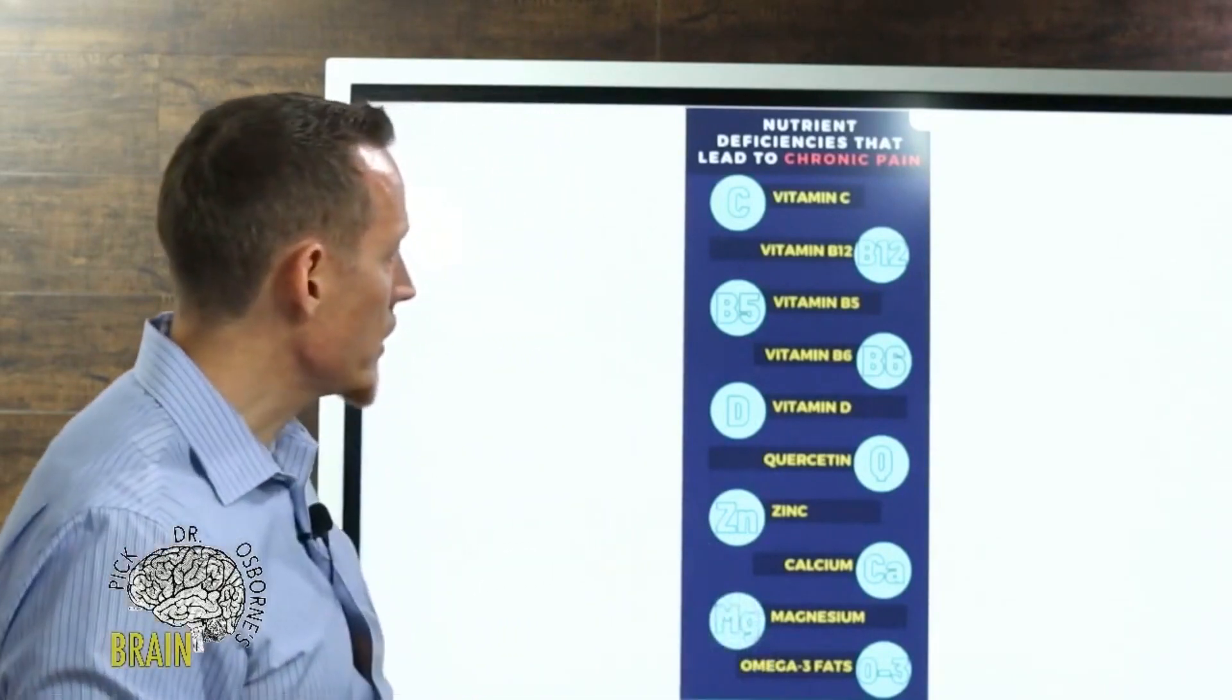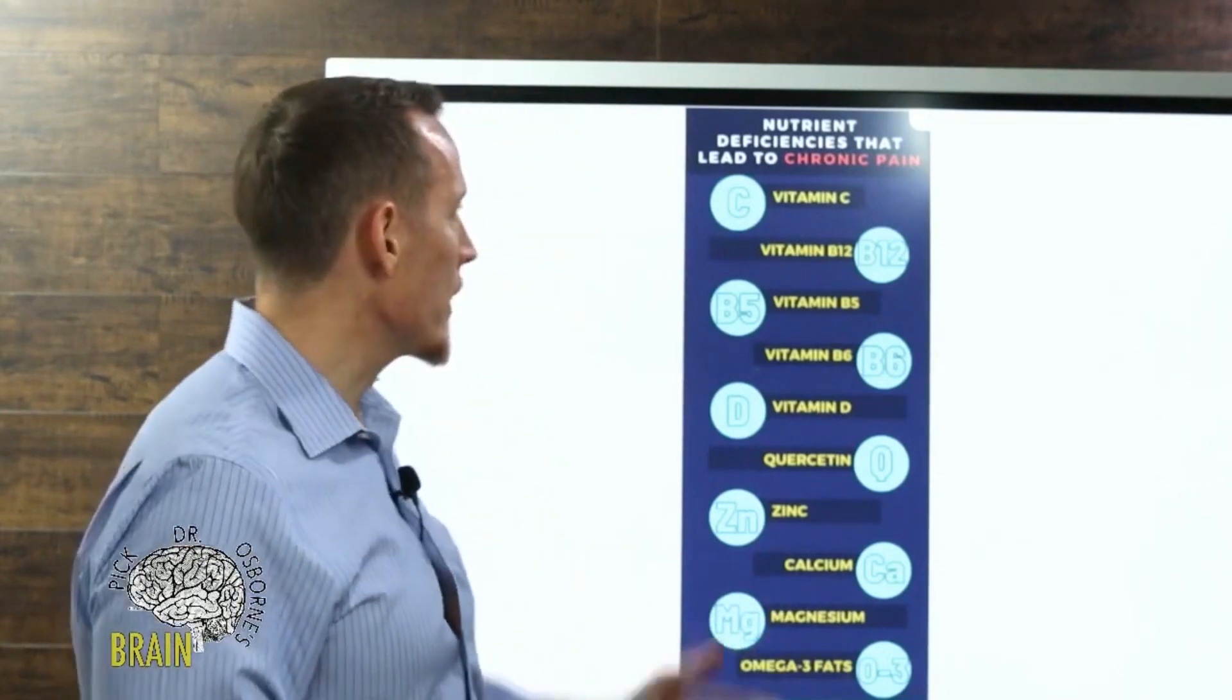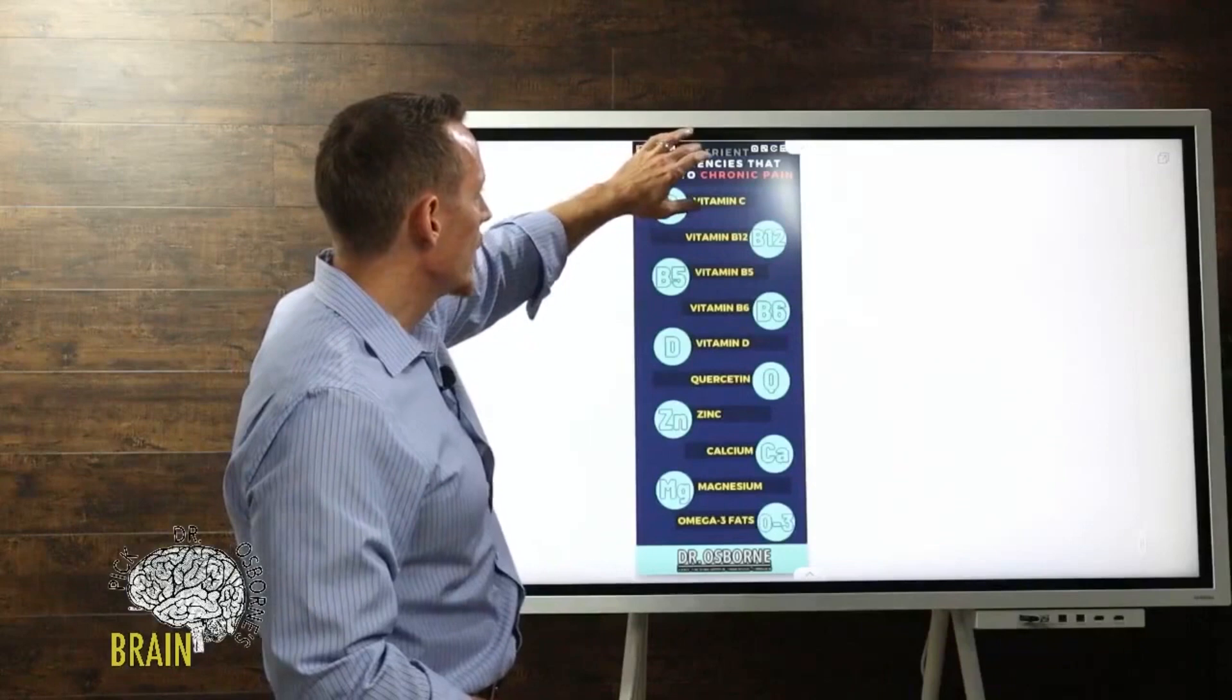Autoimmune disease is the number one killer in females under the age of 65. Changing your diet is pretty easy compared to living with all the symptoms, problems of autoimmune disease, and the drugs and consequences downstream from it. Diet change is a relatively easy change when you consider the alternative.